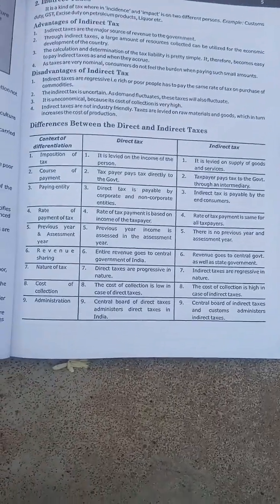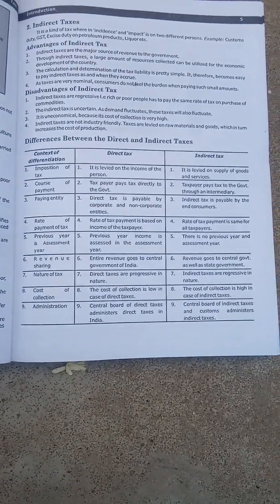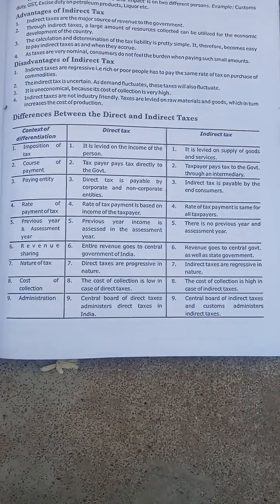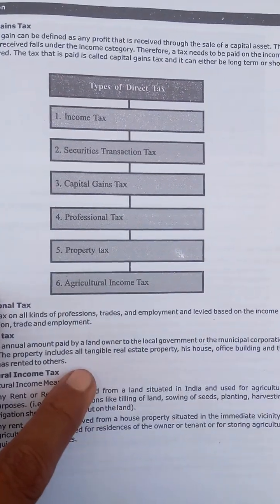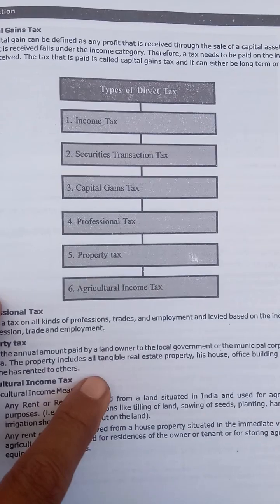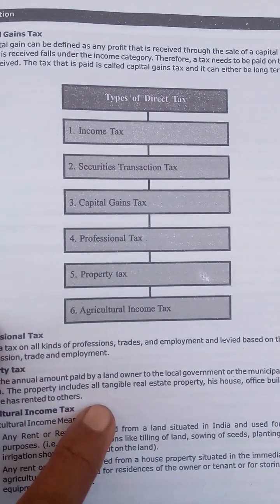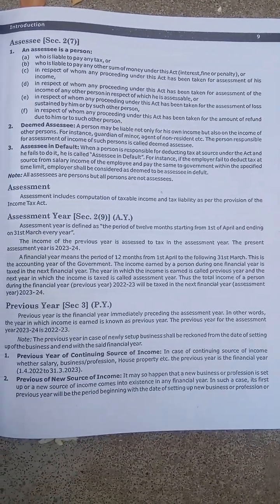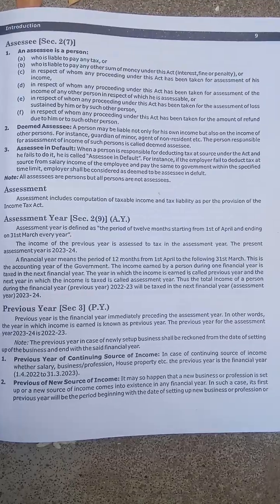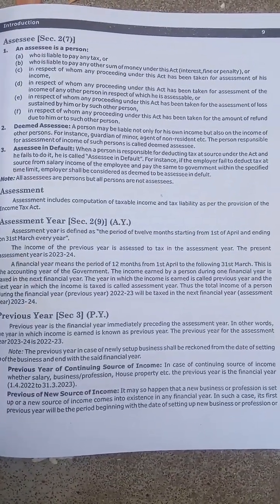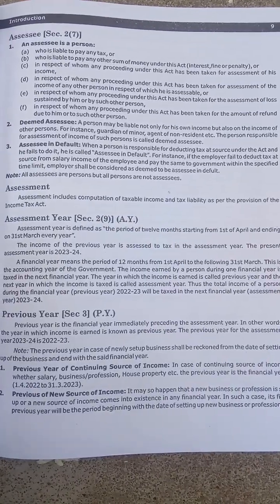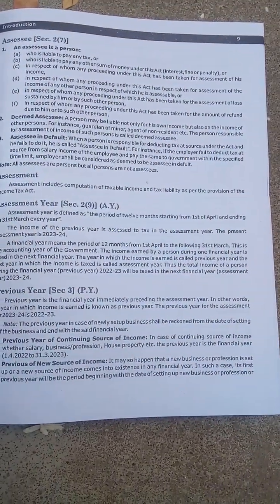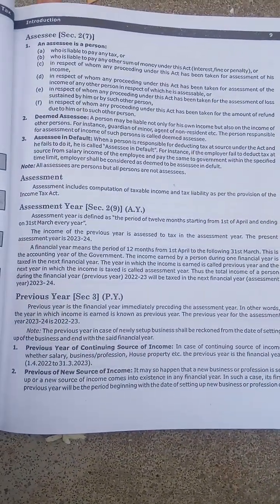Direct taxes — the money is taxable under direct taxes. Under the Income Tax Act 1961, we calculate taxes. The first thing is: who is able to pay any tax or any other sum of money under this act?